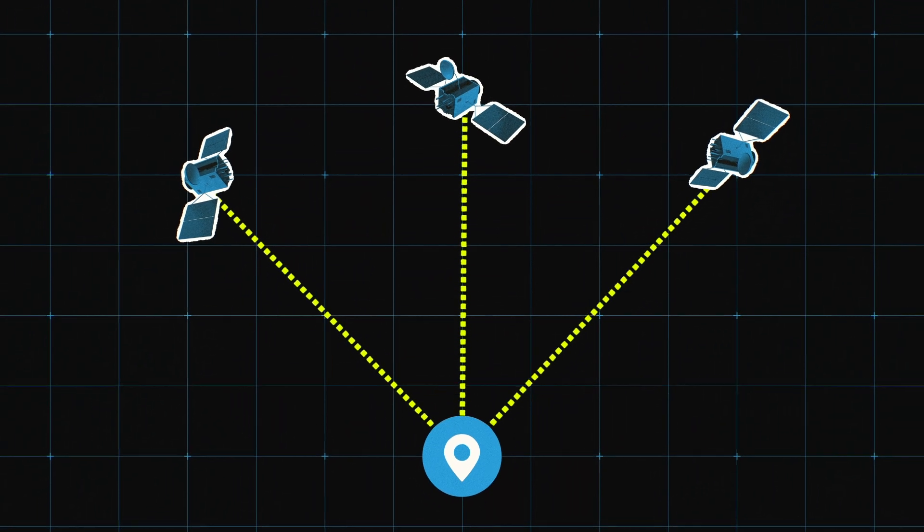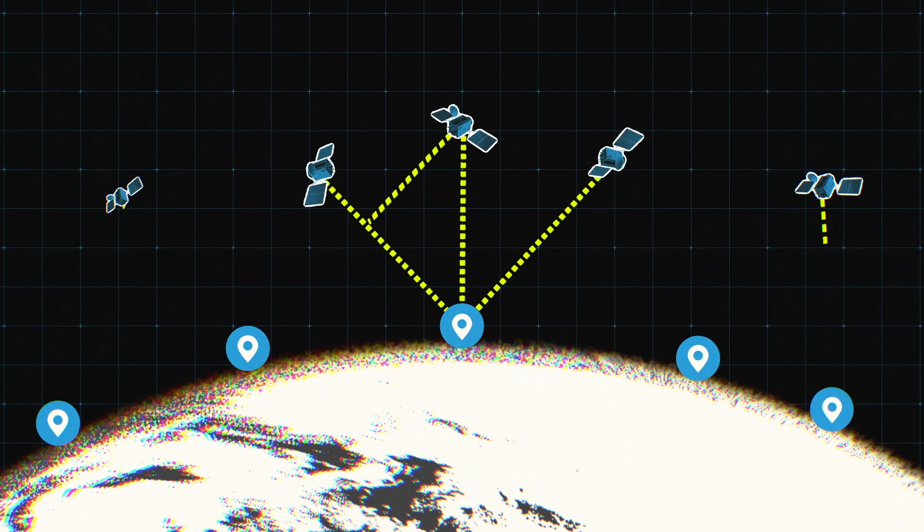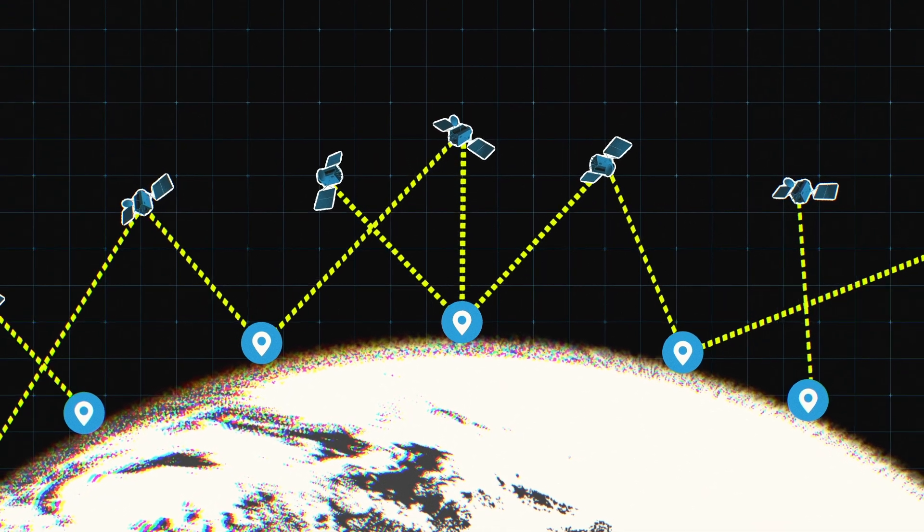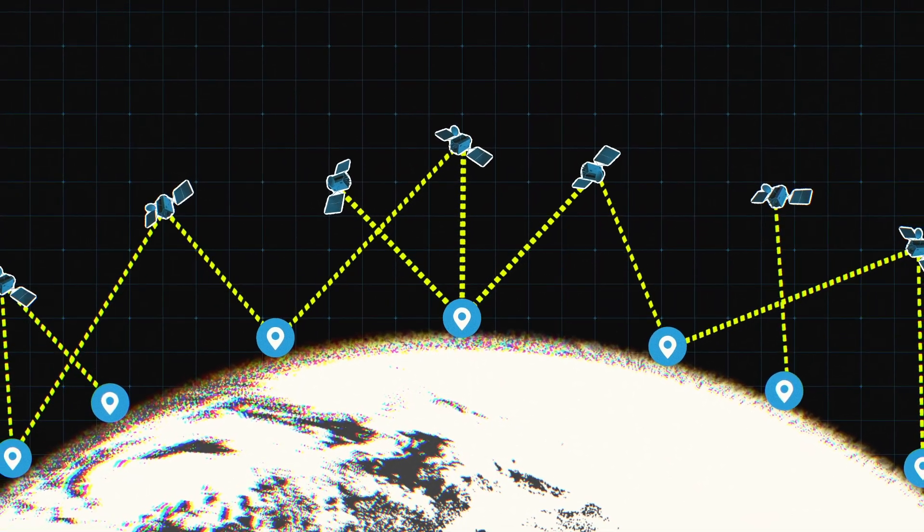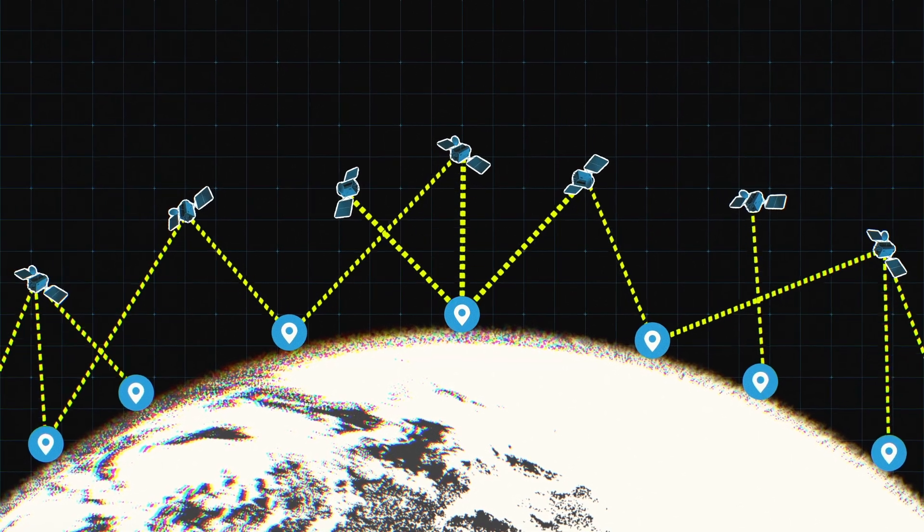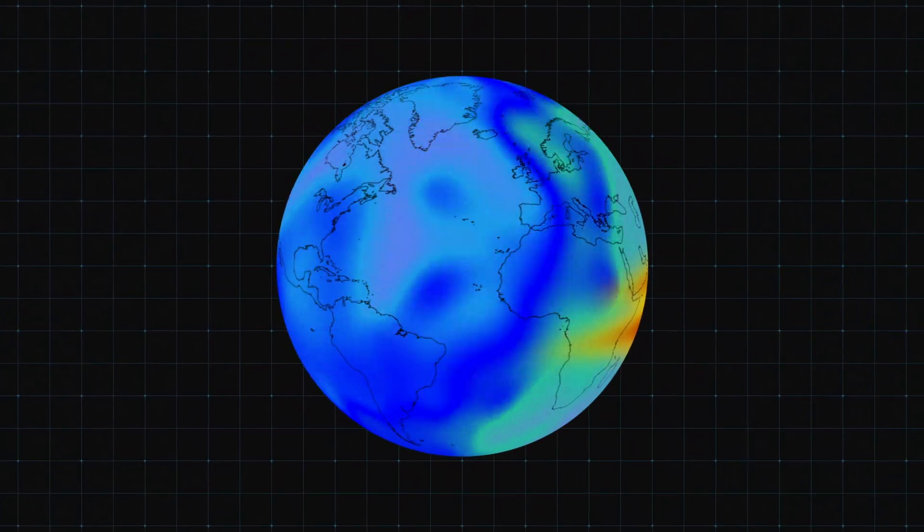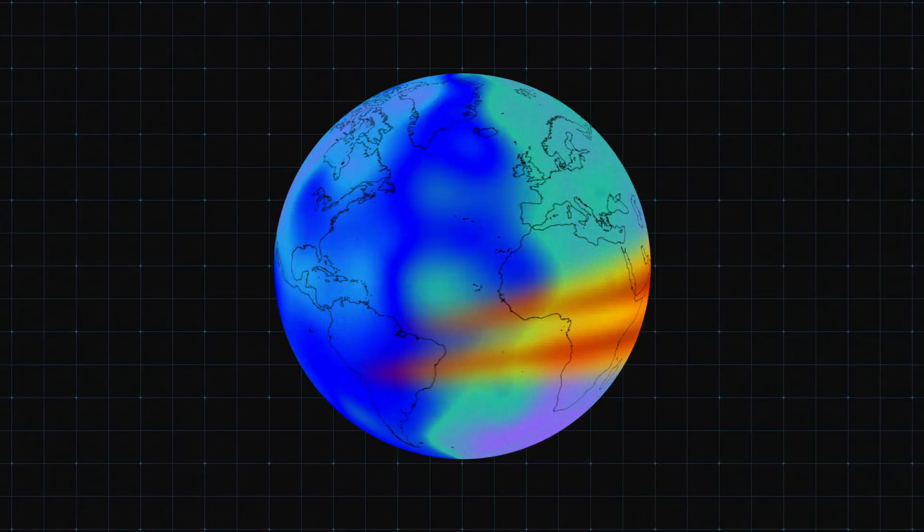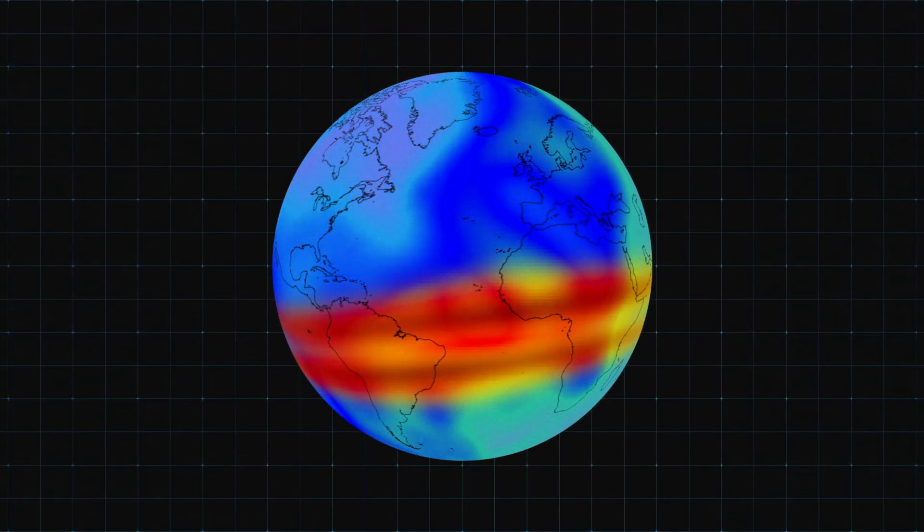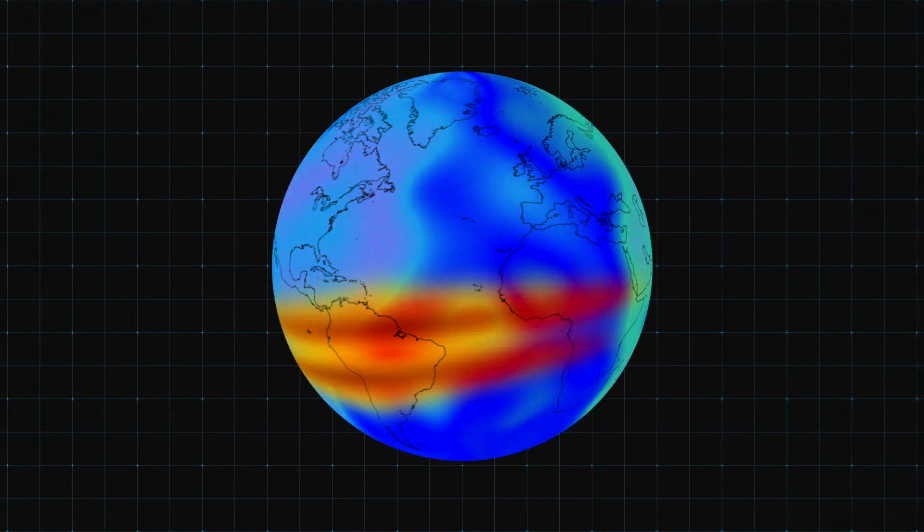Instead of a few thousand stations across the planet, there are billions of Android phones all over the world. And by crowdsourcing this information, we can measure the quality of these signals at a massive scale, which allows us to visualize signal activity much more clearly. As a result, we're able to create a more accurate map of the ionosphere that is constantly being updated.